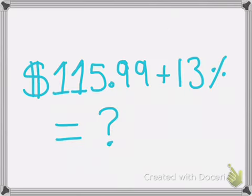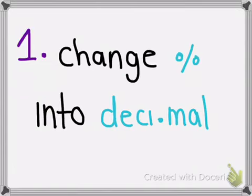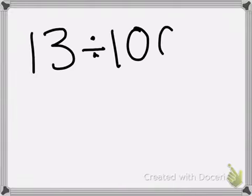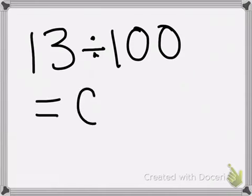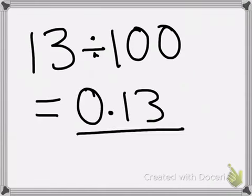First you will need to make an equation which would be $115.99 plus 13%. The very first step is to change the percentage into decimal form so you would be able to answer the question. You would do 13 divided by 100, which gives you the answer of 0.13. So now it's in decimal form.